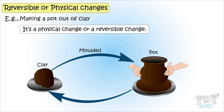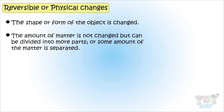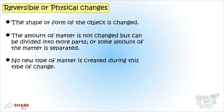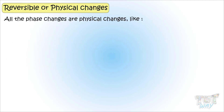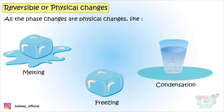So we learned: physical changes are where the shape or form of an object is changed. The amount of matter is not changed but can be divided into more parts or some amount of matter is separated. No new type of matter is created during this type of change. All phase changes are physical changes — like melting, freezing, and condensation. All these are physical changes.